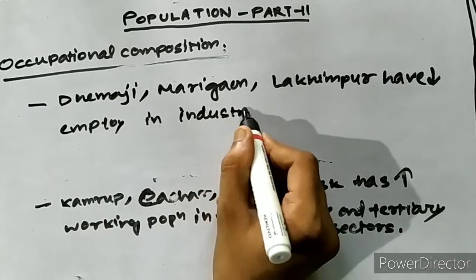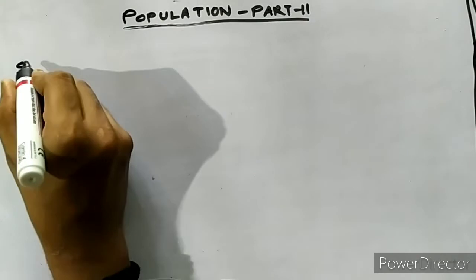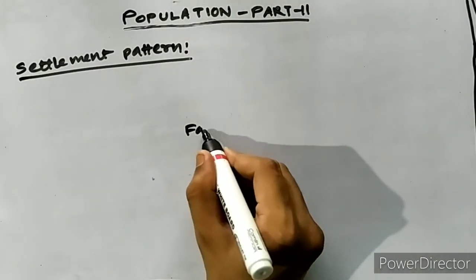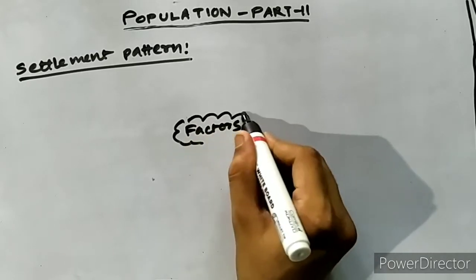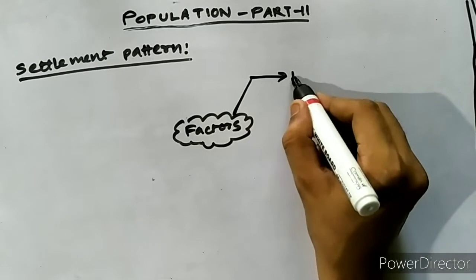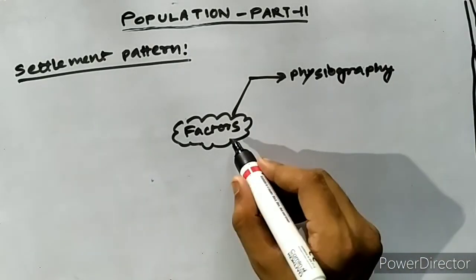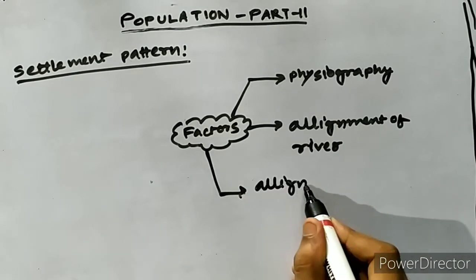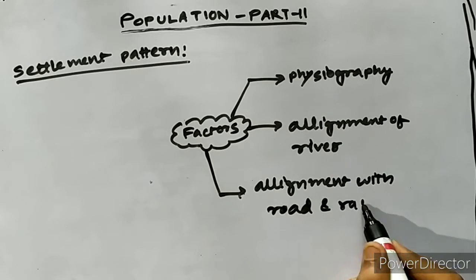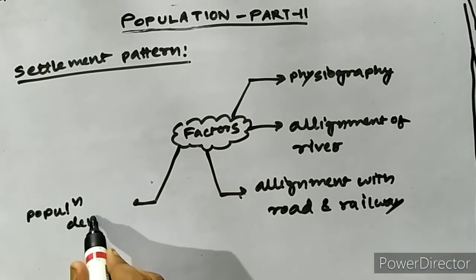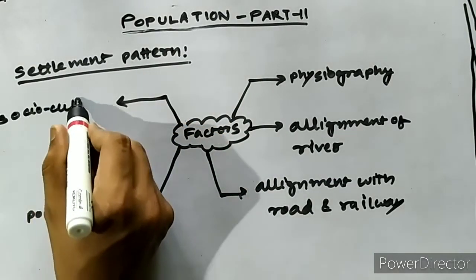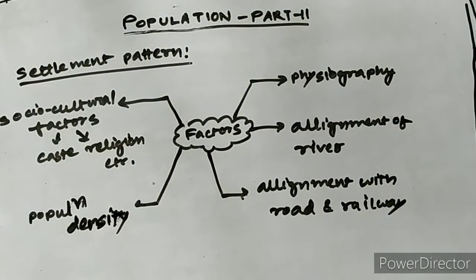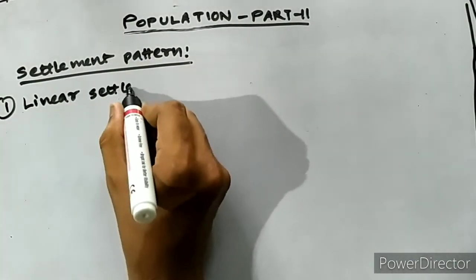We have now discussed all the important points of the demographic characteristics of the population of Assam. Let us now see the settlement patterns. The rural settlement of the state varies in form and pattern from place to place. The factors affecting these variations include the physiography of the villages, alignment of rivers flowing near a village, alignment of roads or railways near the village, population density, and socio-cultural factors like caste and religion.